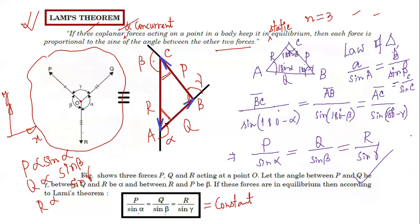Before applying the law of sines, we convert the concurrent force diagram (star form) into a triangle (delta form). Lami's theorem is proved simply by applying the law of triangle — converting from the diverging/converging star form to the closed triangle delta form and applying the sine rule.